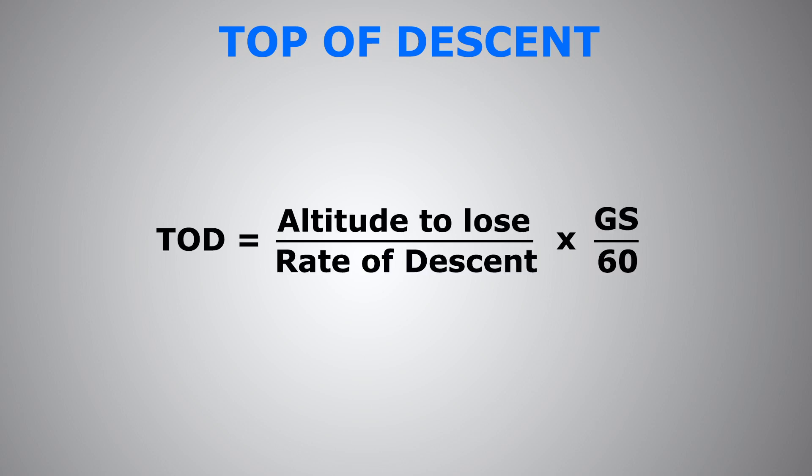Here is the formula. The top of descent equals the altitude to lose over the rate of descent multiplied by ground speed over 60.